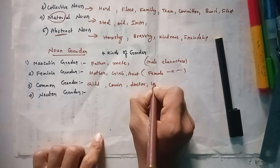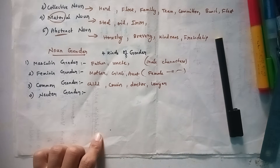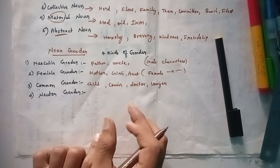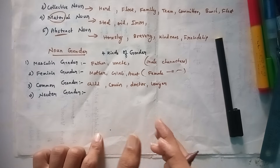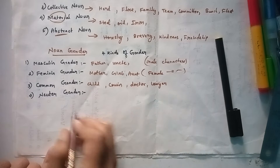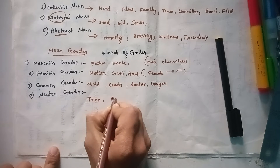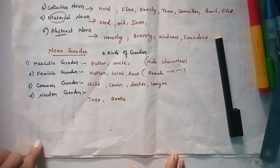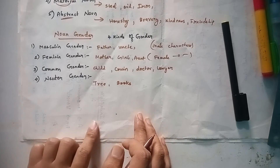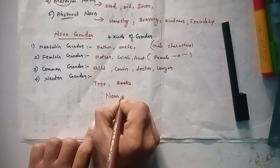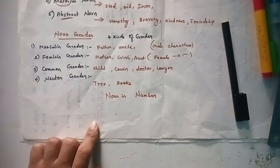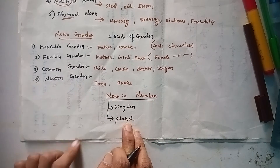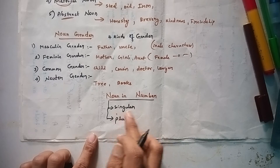Neutral gender is a word used to denote something that is neither male nor female. Examples: tree, books. Next, we discuss noun in numbers. Nouns in numbers can be divided into singular and plural.